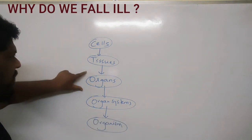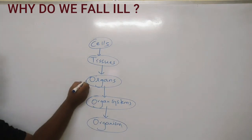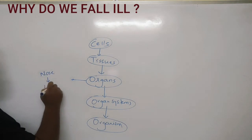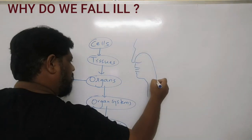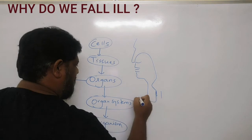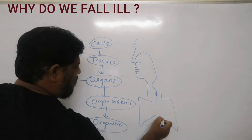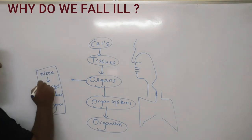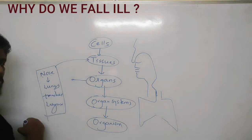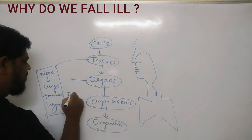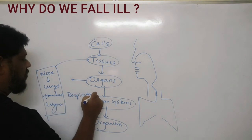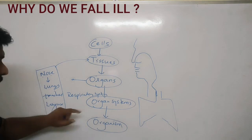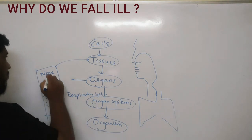For example, take the organs: the nose, trachea, larynx, and lungs. What system comes to mind? These are all different organs made up of tissues, and all these organs combine to form the respiratory system.